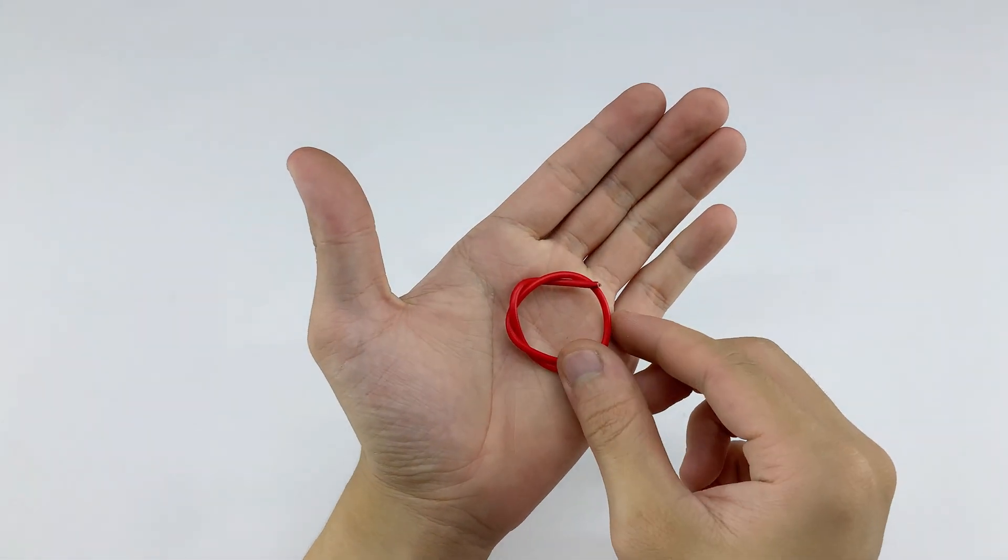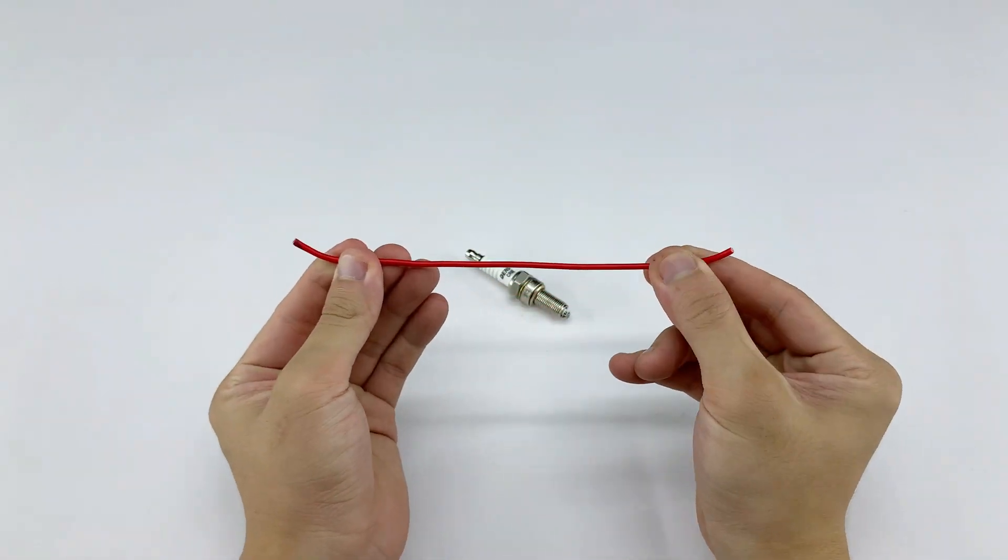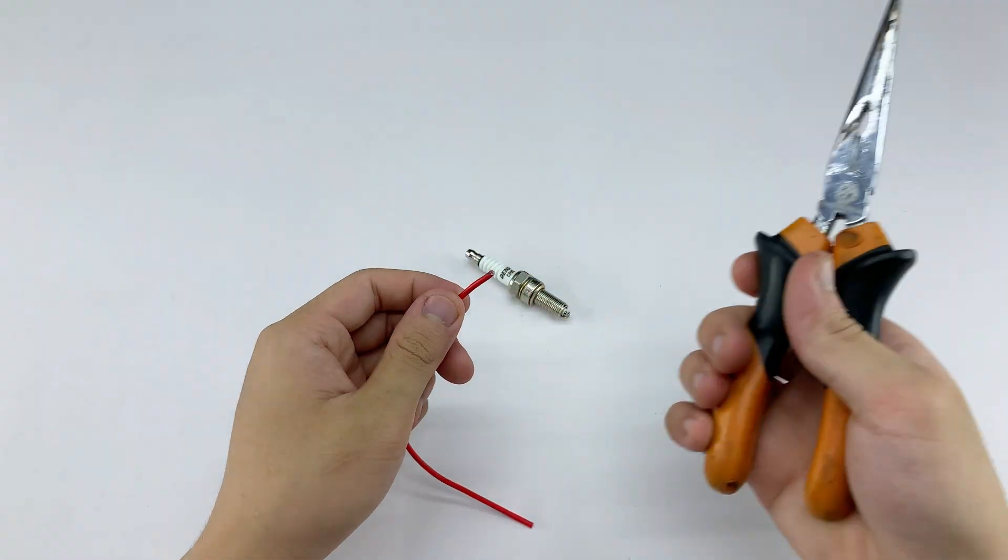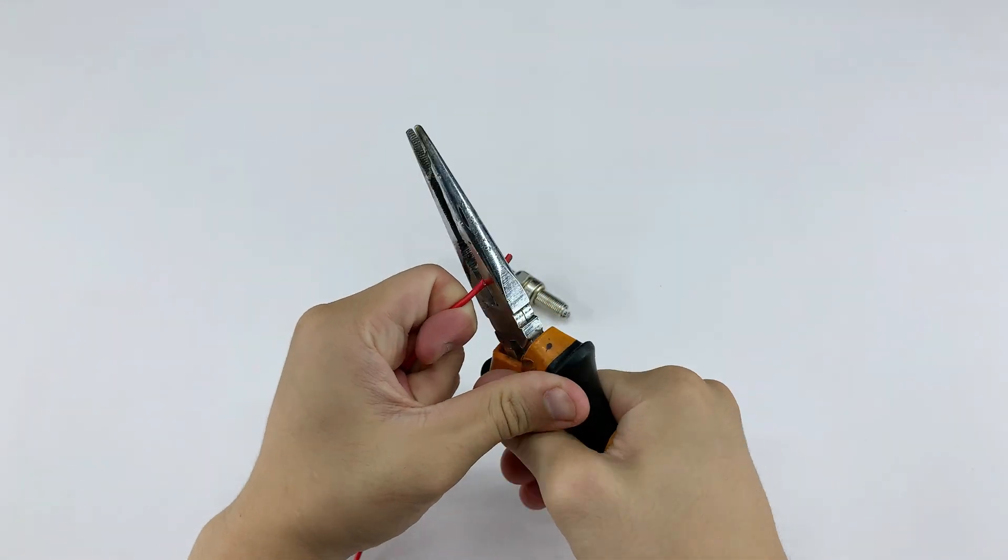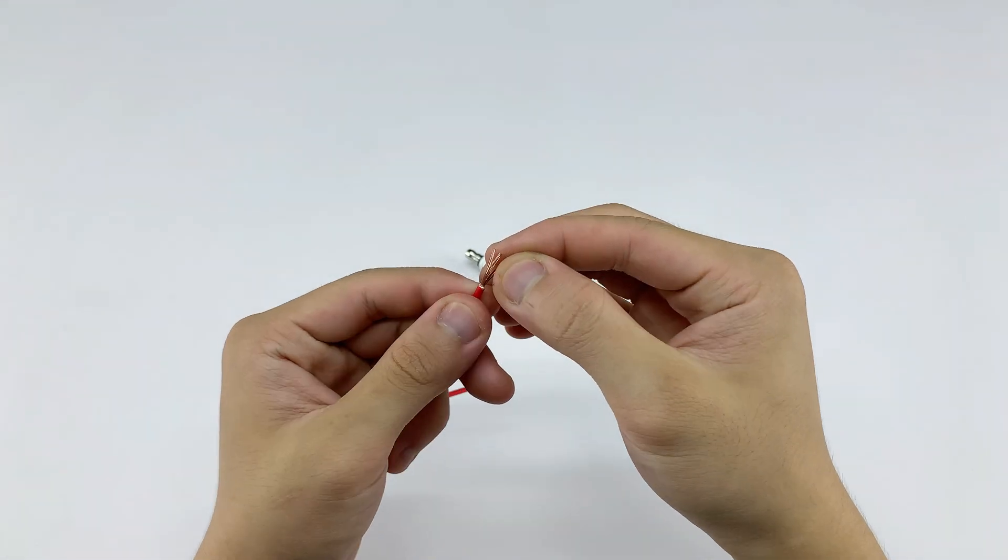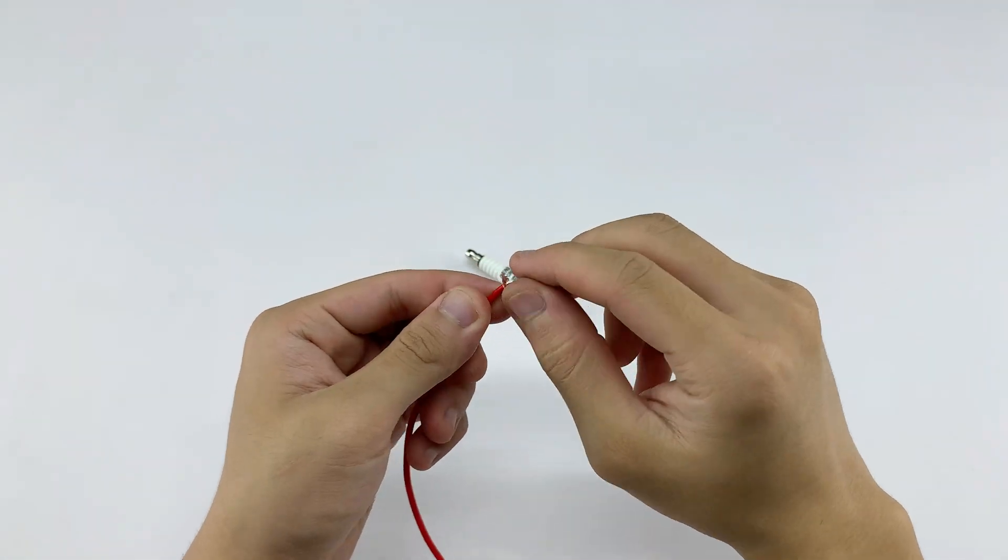First we're going to create a short circuit. It's simple. Connect one end of the wire to the tip of the spark plug, and the other end to the spark plug's threaded body. Make sure the connections are secure so nothing comes loose or shorts out. This small step is crucial. It controls the flow of electricity and ensures the spark is strong.